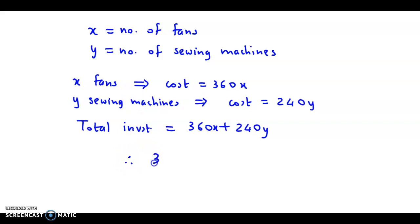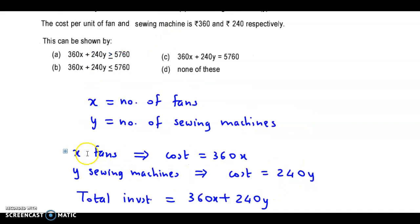This equation is 360x plus 240y less than or equal to 5760. Therefore, the correct answer is option B.